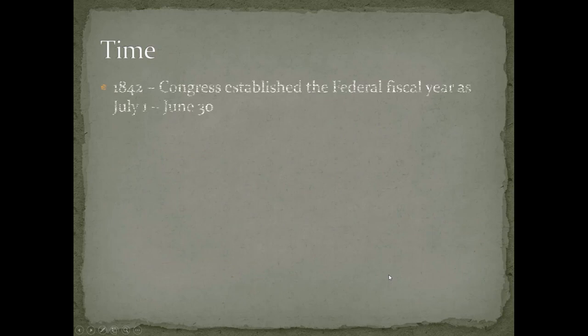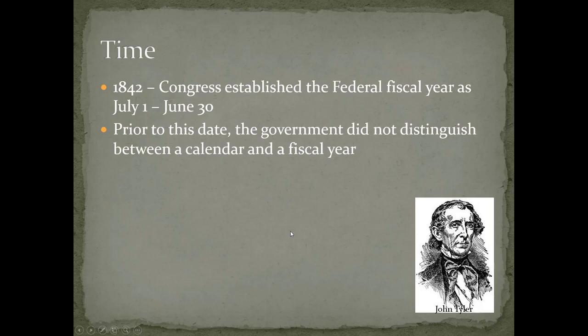Back to time: in 1842, Congress established the federal fiscal year as July 1st through June 30th. Prior to this date the government did not distinguish between a calendar and a fiscal year. This was done during the term of John Tyler.